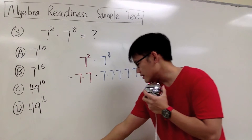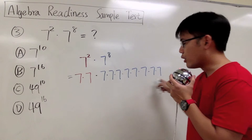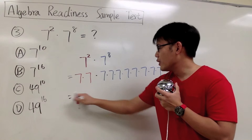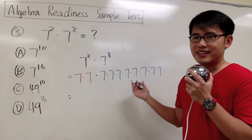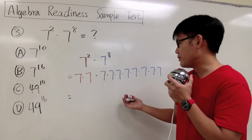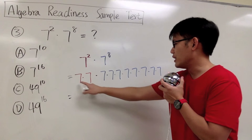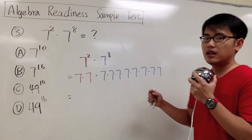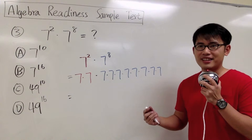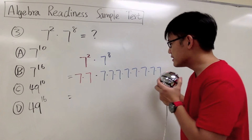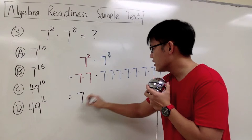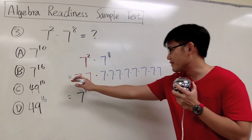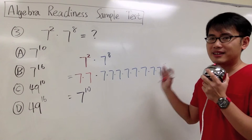As we can see in this long expression, all together we have just a bunch of 7s multiplying together. How many of them do we have all together? We count 10 of the 7s multiplying together. We can write this as 7 raised to the 10th power, because we have 10 of the 7s multiplying together.